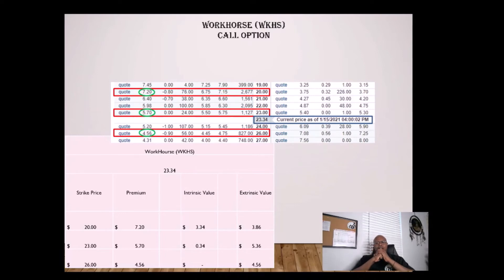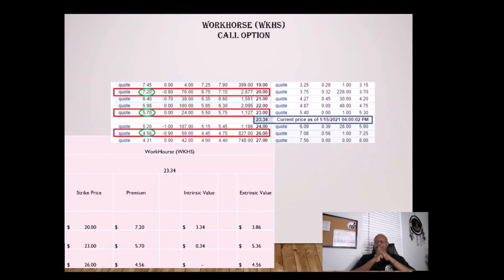On the $20 strike price with a $7.20 premium, the intrinsic value — the true value of that premium — is $3.34. Everything else, which is $3.86, is extrinsic value, or time value. If the price of the stock stays the same, that portion is going to decay as we get closer to the expiration date.